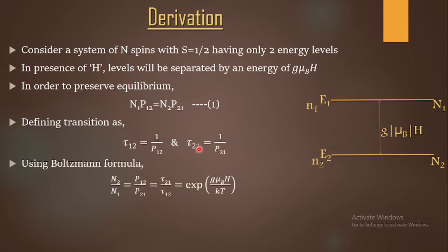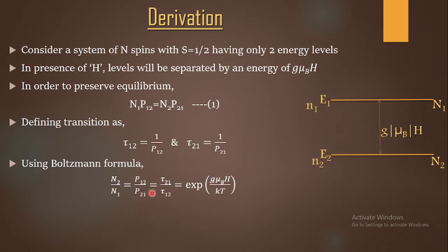We define the relaxation times as τ12 = 1/P12 and τ21 = 1/P21. From equation 1, N2/N1 = P12/P21, which in terms of relaxation times becomes τ21/τ12. Using the Boltzmann formula, the ratio of populations corresponding to the energy levels equals the exponential of the energy difference divided by k_B·T.